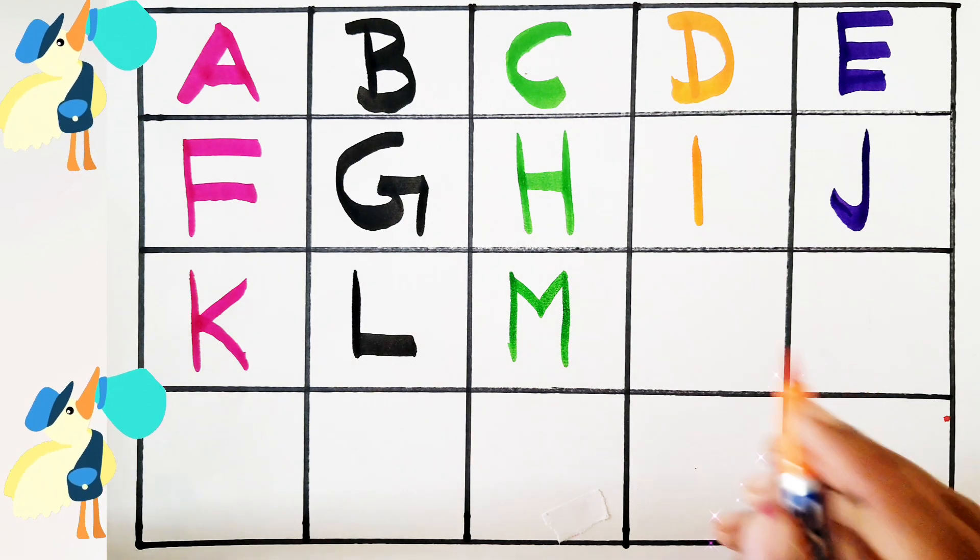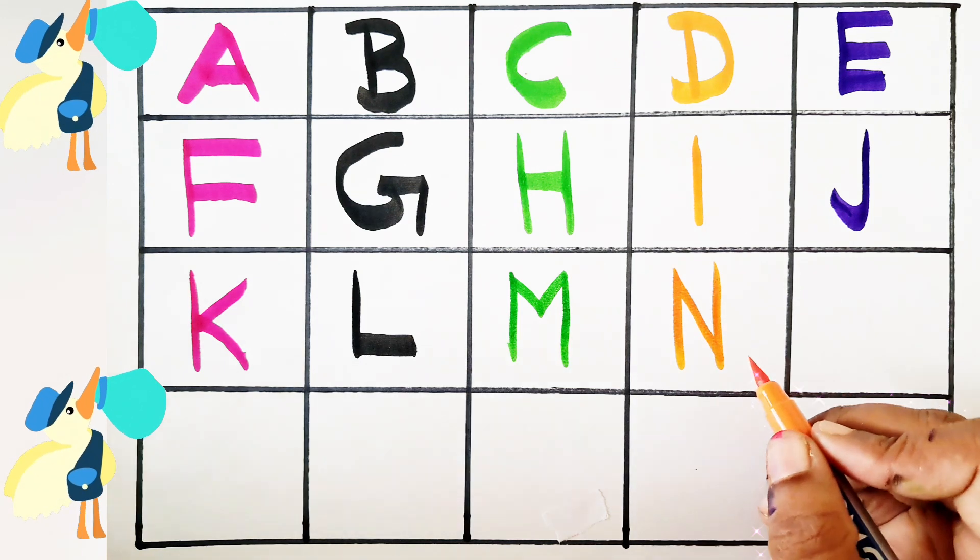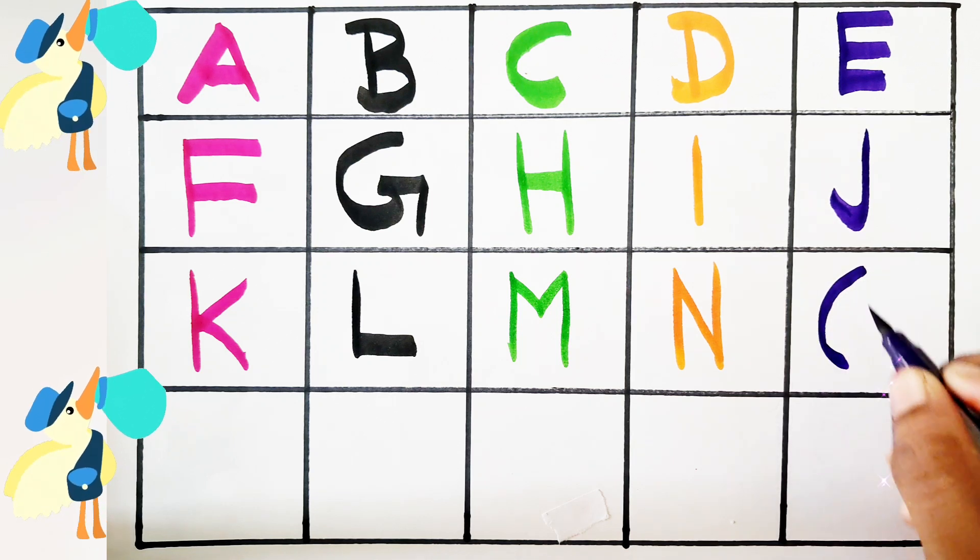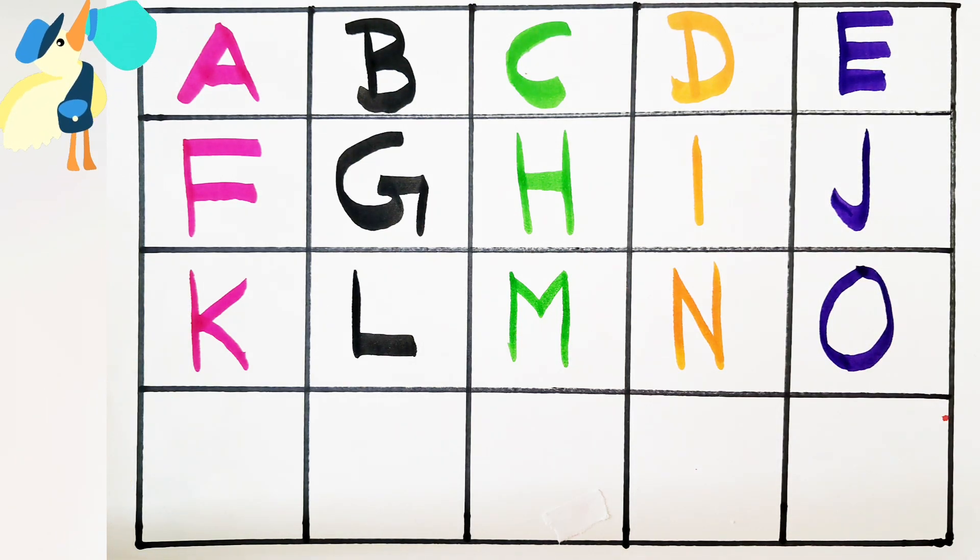Next letter: N - N for nest and N for nose. Next letter: O - O for owl and O for orange.